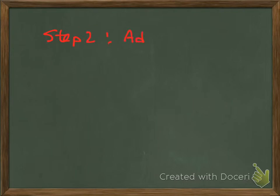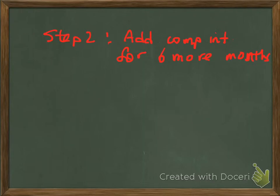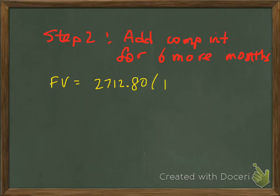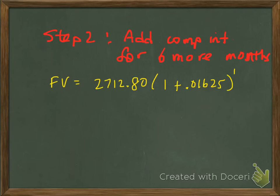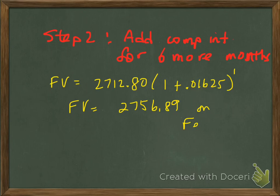Step two is to add compound interest to the $2,712.80 for one more semiannual period. So the final value equals $2,712.80 multiplied by (1 + 0.01625)^1, since it earns interest for exactly one semiannual period. That final value works out to $2,756.89 on February 1, 2012.